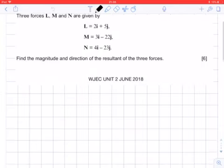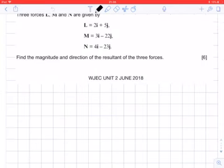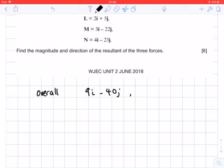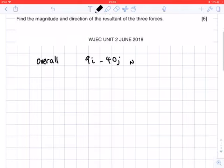Now, the I direction and J direction can be summed to find the overall I and J direction forces. Overall, what we'll have is 2, 3, and 4I, which obviously makes 9I, and then 5 minus 22 minus 23 would be minus 40J. So the overall I and J components of the force are 9I minus 40J Newtons.